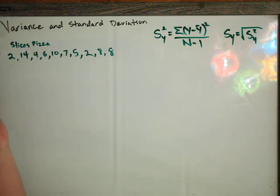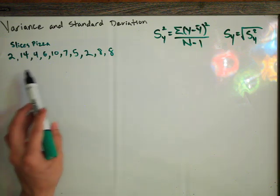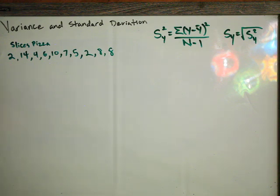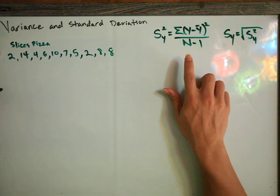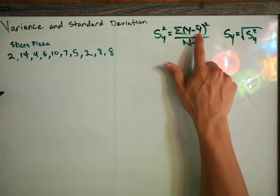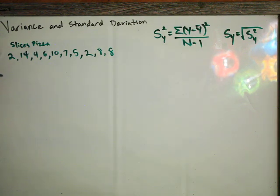Here we have how many slices of pizza people in the class think they can eat. We've asked 10 people, and these were their answers. So what we need to do is figure out what the mean is, what y bar is.